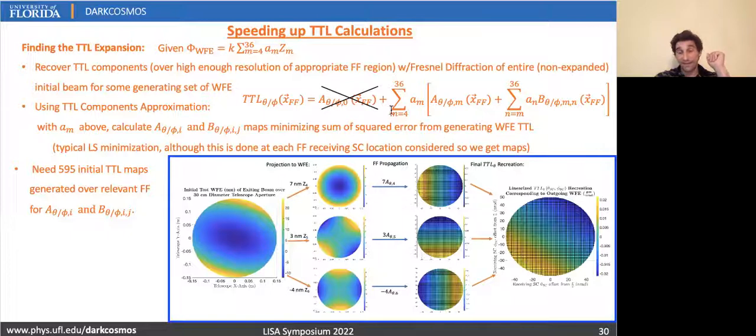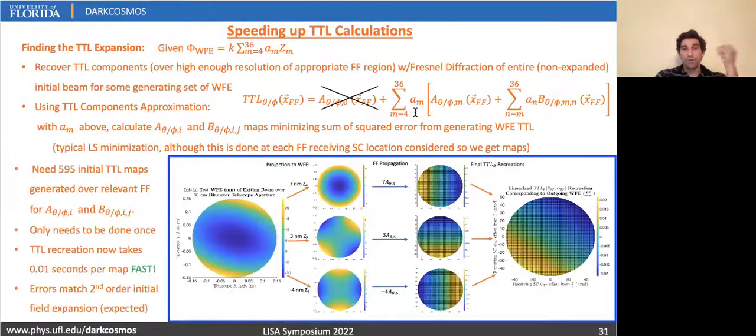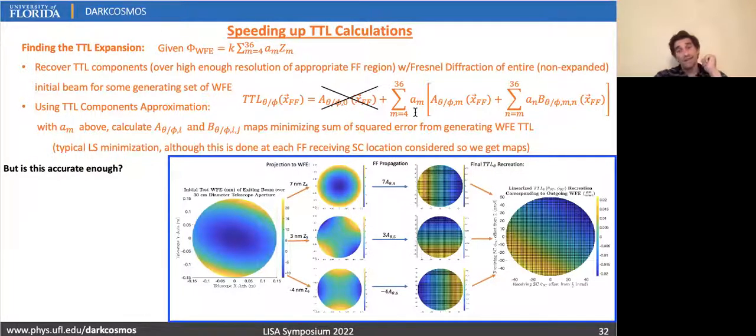So for a second order, we need 595 initial maps for this to be recovered efficiently. All of the 595 wavefronts propagated to a significant number of far field points in order to get the A and B. The whole point being that once that's done, we never have to do it again. And now we can generate tilt length estimates from any wavefront error in 10 milliseconds.